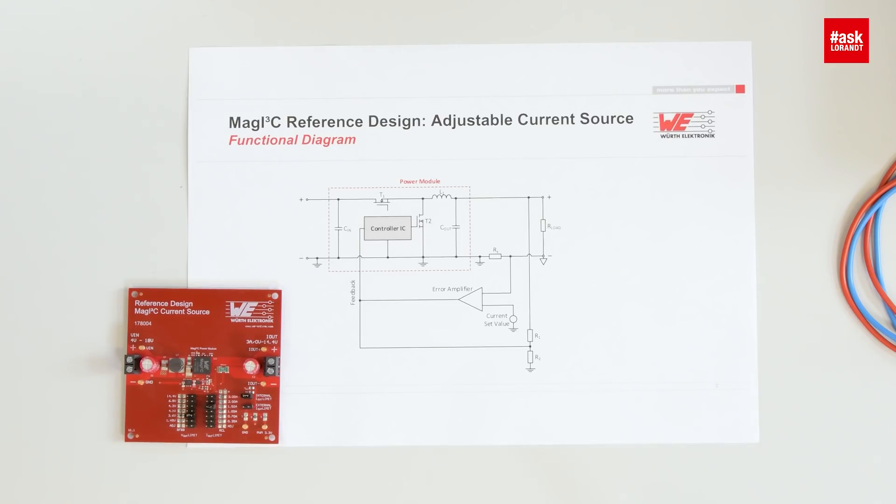or to power bright LEDs. For those you need a current source rather than a voltage source. I saw that in this module there are a few more components. Why? Okay, let me show you.